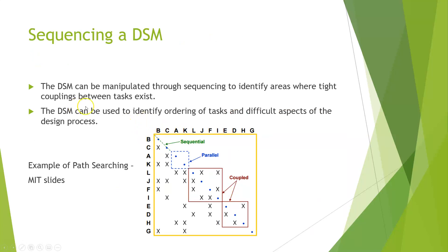The problem at hand is sequencing a DSM. The DSM can be manipulated through sequencing to identify areas where tight couplings between tasks exist. These tight couplings are shown on the diagonal of the matrix and can be identified once a DSM has been sequenced. Task A is no longer at the top — now it's task B. They're sequenced this way to give us an ordering of tasks, and a DSM can identify ordering of tasks and difficult aspects of the design process. Task B does not depend on any other task, so B can be ordered first, then C goes after B because C only depends on B. This is essentially permuting the rows and columns to get a lower triangular matrix.